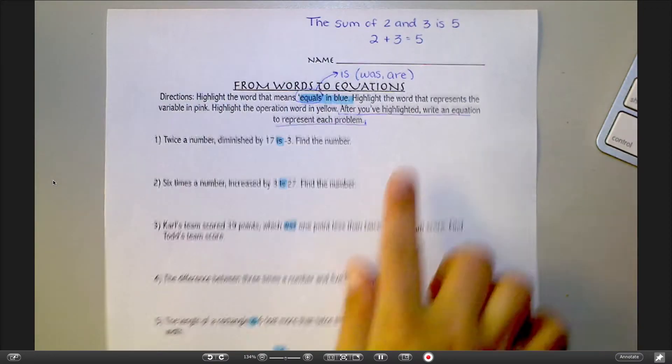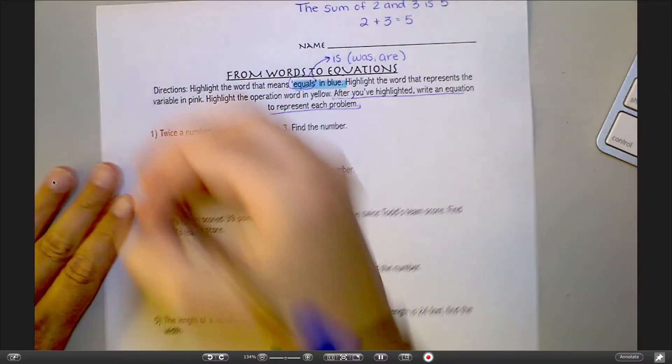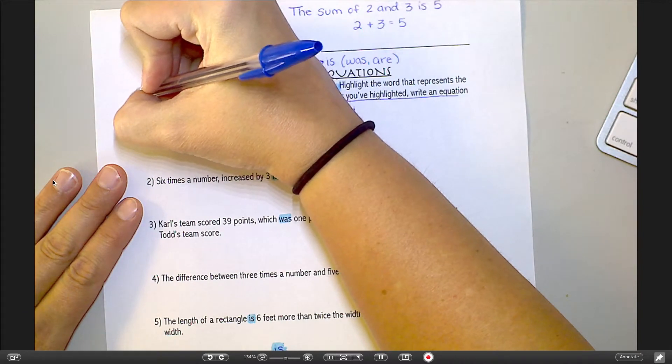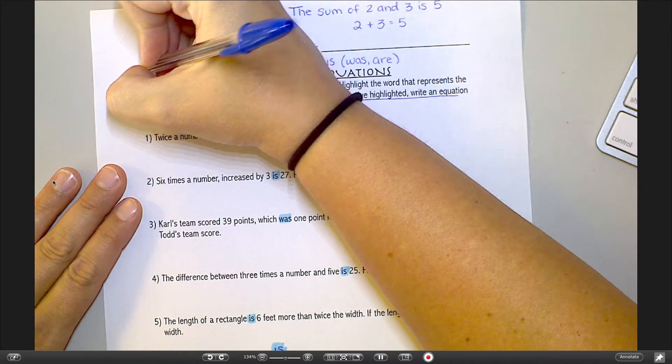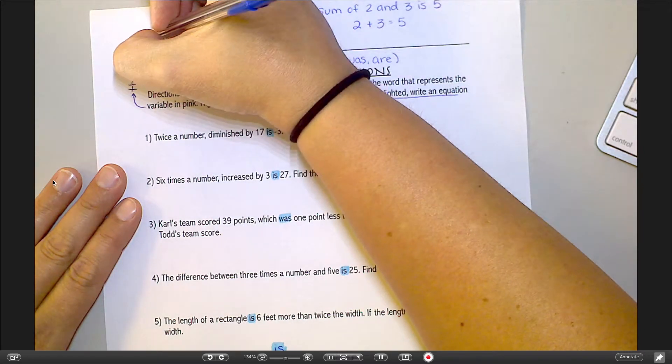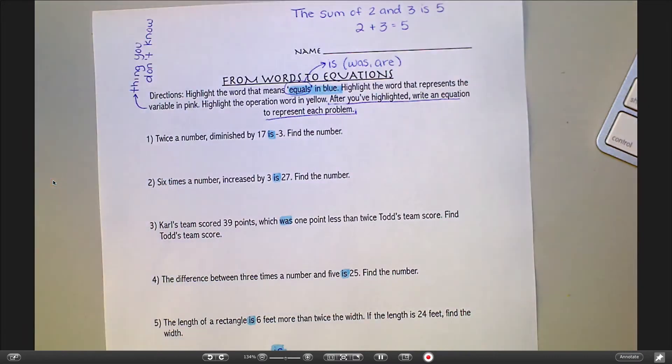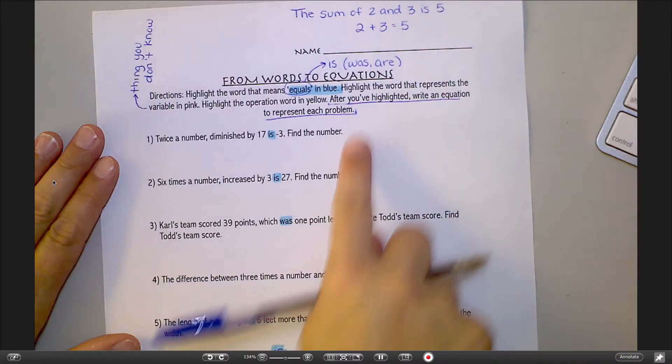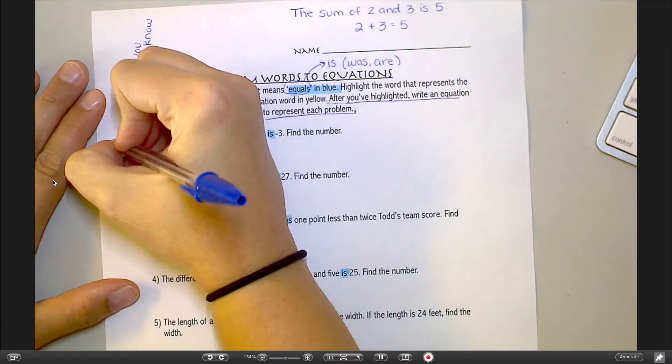In the next set of directions, they highlight the word that represents the variable in pink. The variable in algebra is the thing you don't know. But it's a specific thing you don't know. It's the thing you don't know and you want to know. It's the thing that you're trying to find mathematically. And that process, the finding what it is that you don't know, is called defining the variable.